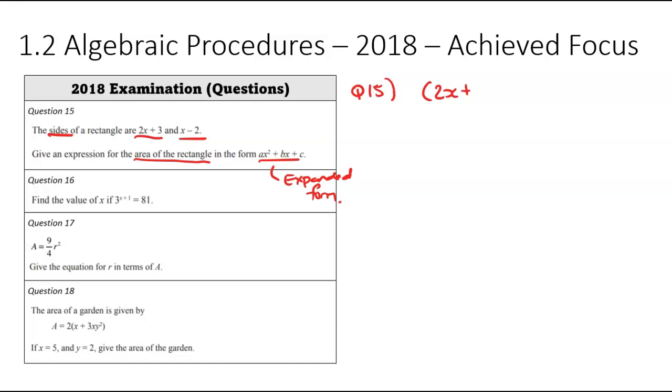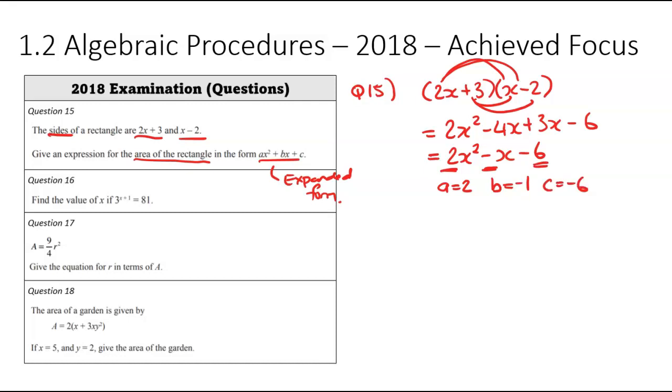So we've got 2x plus 3 and then we've got x minus 2. I'm going to use my rainbow method to do this. So that there is going to be 2x squared over here, minus 4x down below, now plus 3x, and then finally minus 6. I'm going to group the ones in the middle together. So that's going to get me to 2x squared minus x minus 6 and the numbers out front. There's my a value, so a is equal to 2. Over there b would have been equal to negative 1, and down the end c would have been negative 6. So I don't need those, but that answer there would be the form that they are looking for.